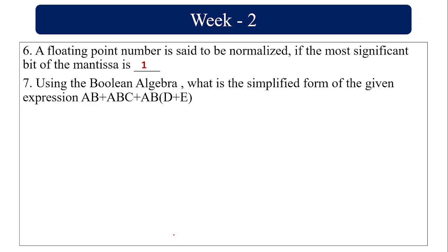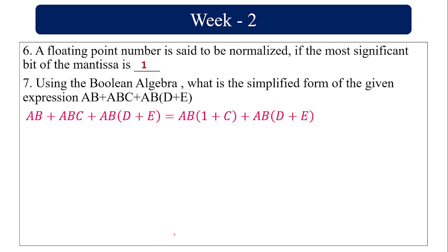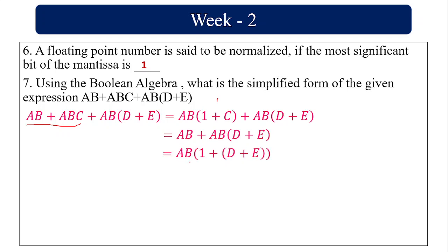Using Boolean algebra, simplify AB plus ABC plus ABD plus C. Taking AB common from the first two terms gives AB(1 plus C), and since 1 plus C equals 1, this reduces to AB. Then taking AB common from the remaining expression AB plus AB(D plus C) gives AB(1 plus D plus C), and since 1 plus anything equals 1, the simplified result is AB.